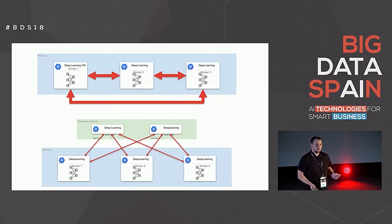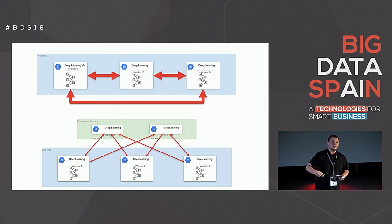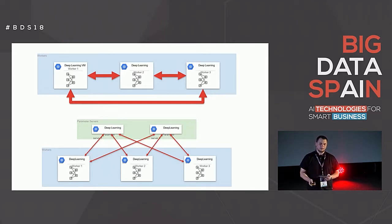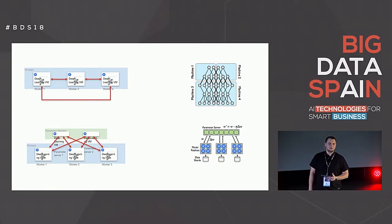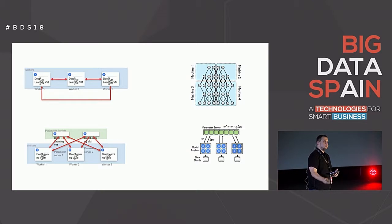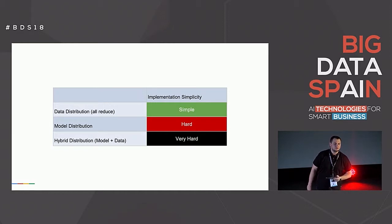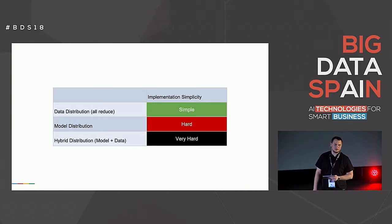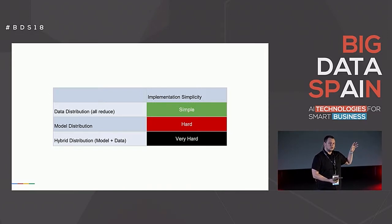Which model should you use today? There's no silver bullet. If you have reliable, fast connections between instances, go with all-reduce topology without parameter servers — that's why TPUs use only all-reduce and don't support parameter servers. If you have preemptible instances, unreliable connections, slow CPU instances, or instances that can go down, use parameter server. But with parameter servers, workers may use stale data — not the latest model version — so you pay extra time for convergence.